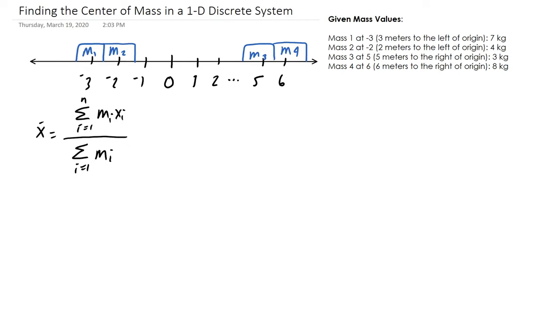Hello. In this lesson, we're going to find the center of mass in a 1D system. We have a number line with the origin at zero and four discrete mass values. Those mass values with their distances are given to the right of the system.